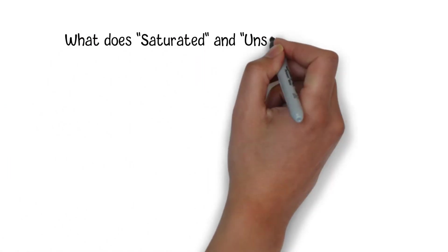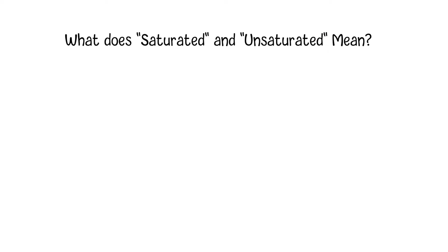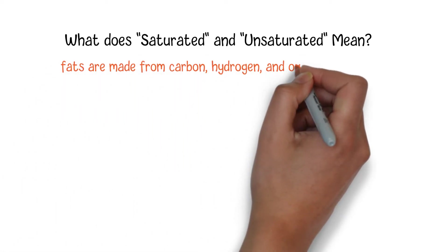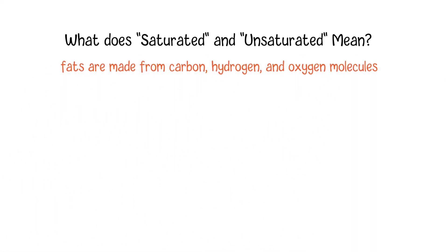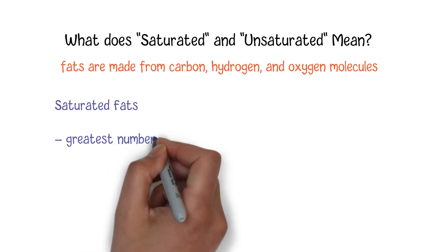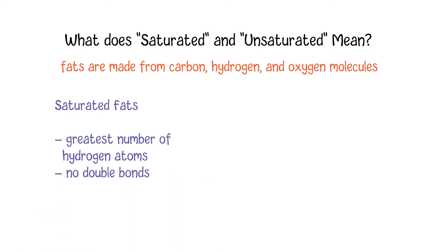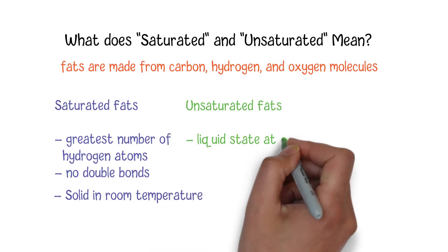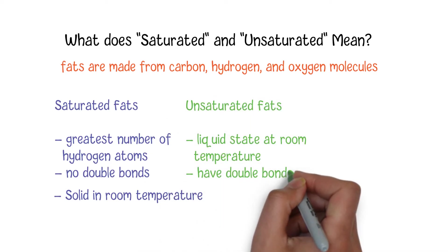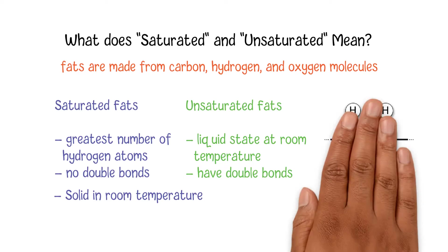The reason for calling some fats saturated is because of their chemical structure. As we know, fats are made from carbon, hydrogen, and oxygen molecules. Some fats are called saturated if they have the greatest number of hydrogen atoms and no double bonds in their chemical structure. This structure makes them solid at room temperature. In comparison, unsaturated fats are usually in the liquid state at room temperature, and they contain one or more double bonds in their chemical structure.